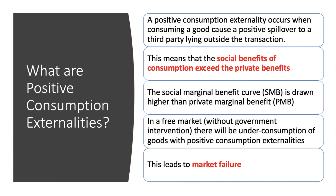As a result, we draw the social marginal benefit curve as higher than the private marginal benefit curve. In a free market, in the absence of government intervention, there will be underconsumption of goods which generate positive consumption externalities, and that is a cause of market failure.